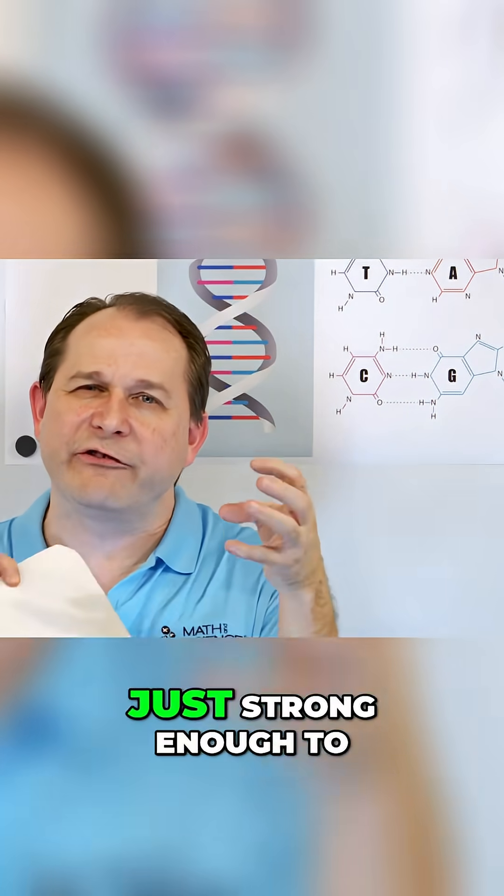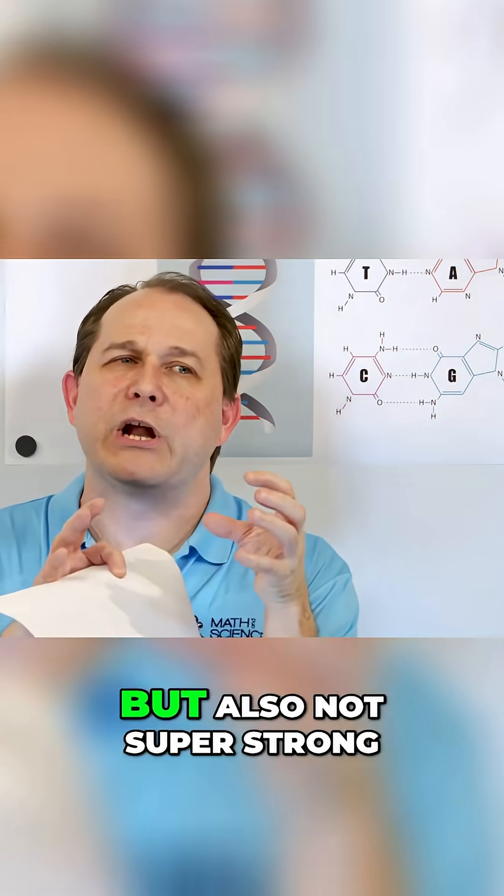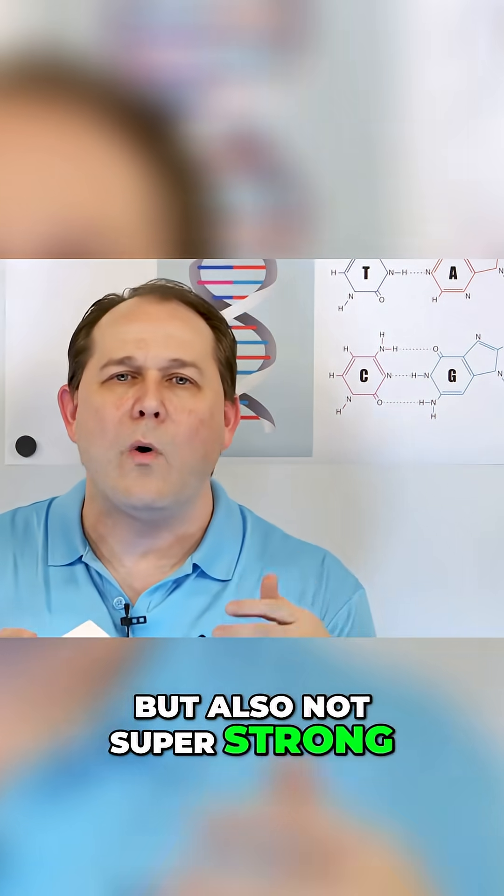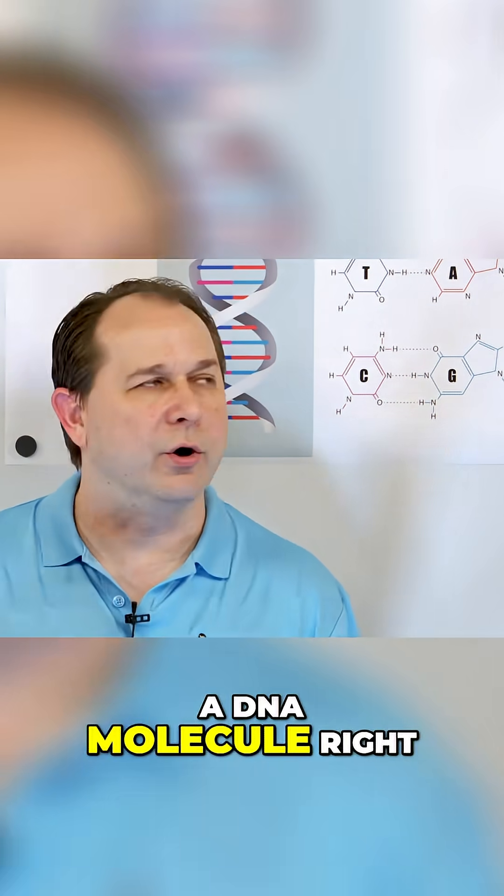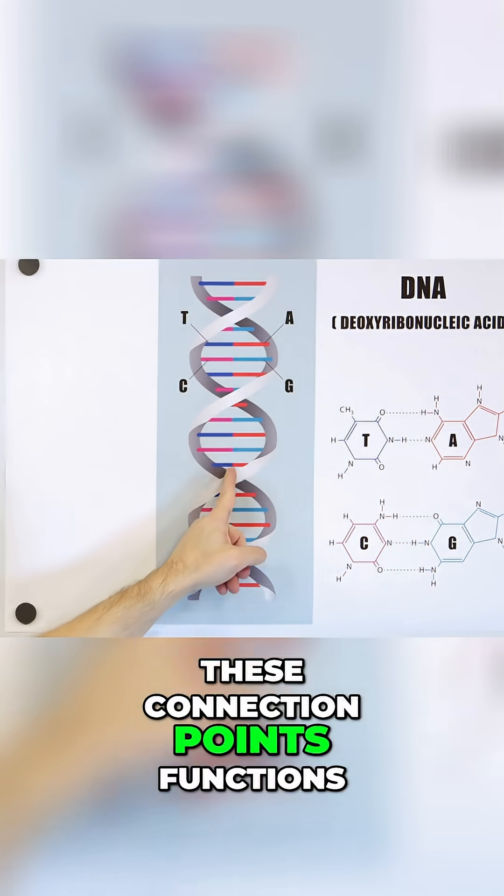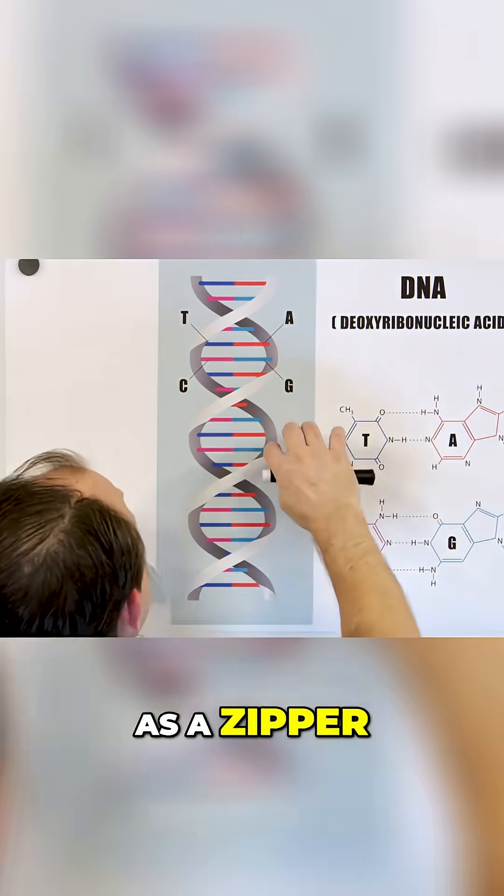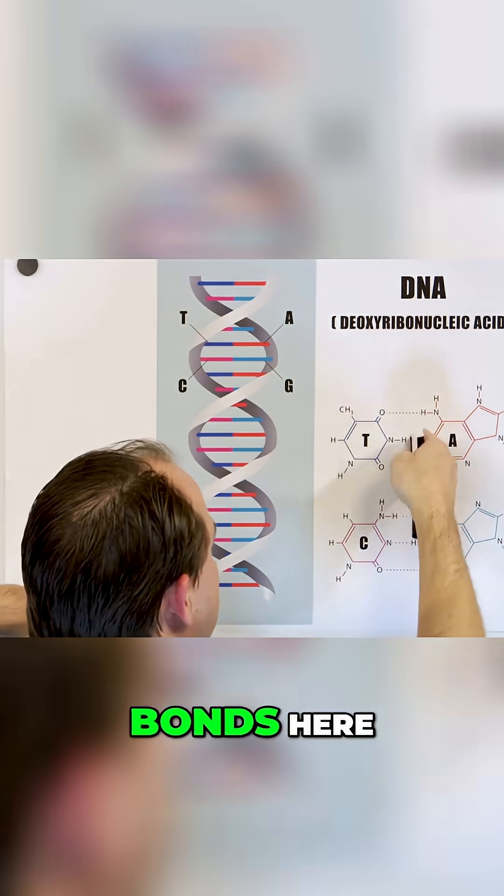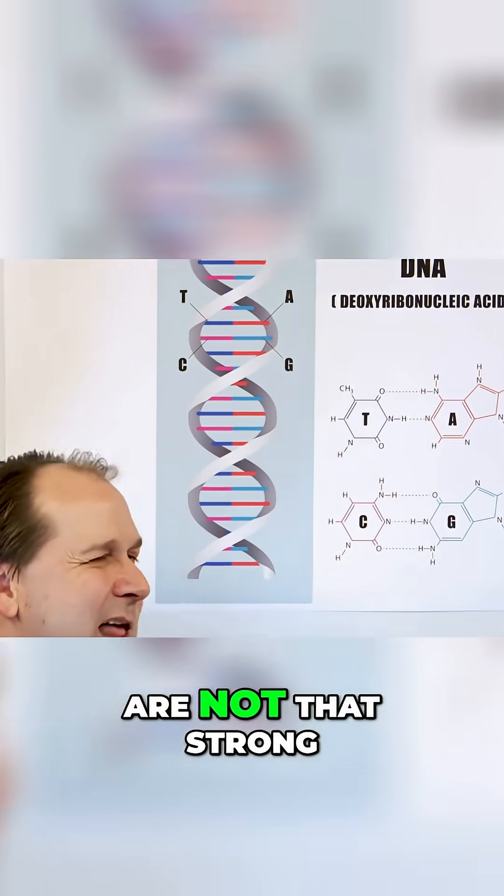But hydrogen bonding is just strong enough to keep it bonded, but also not super strong. Why do you think a DNA molecule right down the middle, because every one of these connection points functions as a zipper. Why do you think it's important that these bonds here, these hydrogen bonds, are not that strong?